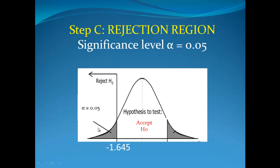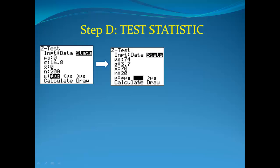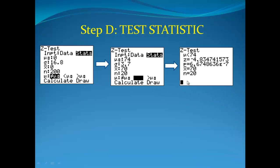So this is our rejection region. This is our acceptance region here. We need to work out what our test statistic is. So if you go to Z-test, where you do all this information — we need to change that to make it the less than, which is the middle one here. Our mean was 74, our standard deviation is 3.7, our sample mean we're talking about is 70, and we did a sample size of 20. So when we do that, we get on our calculator a Z value of negative 4.834. Now, we know that our rejection region is negative 1.645. So what happens is that is actually going to fall inside our rejection region.